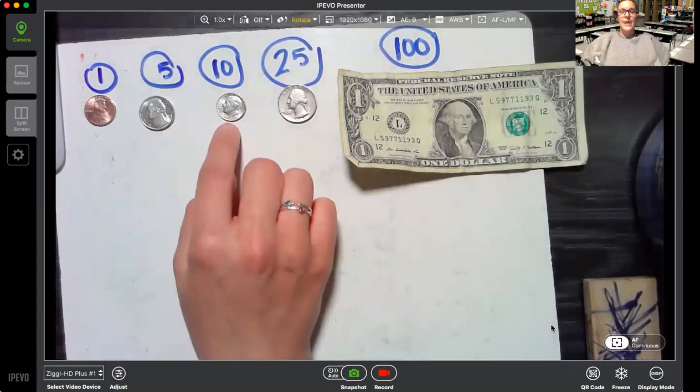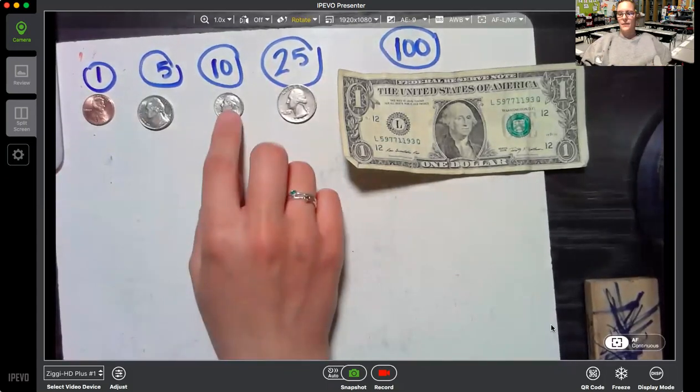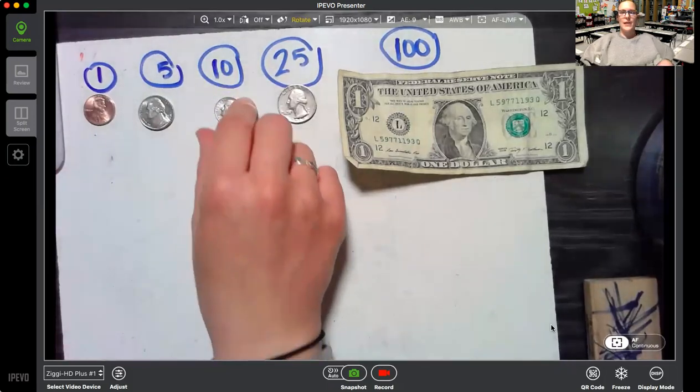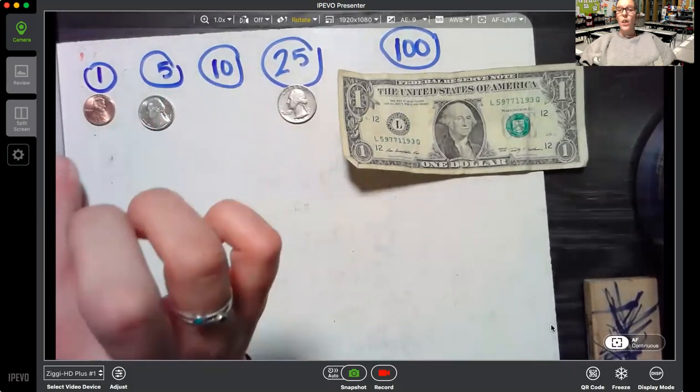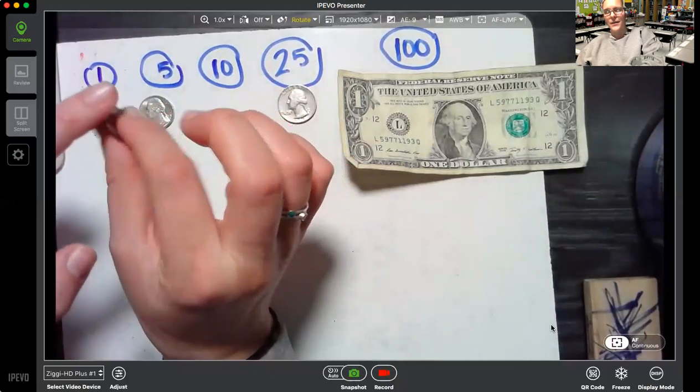Next we have dime, dime, little and thin. I remember you're worth ten. The dime is super small, very thin. If you feel it on your finger, you can feel a little ridge on it.